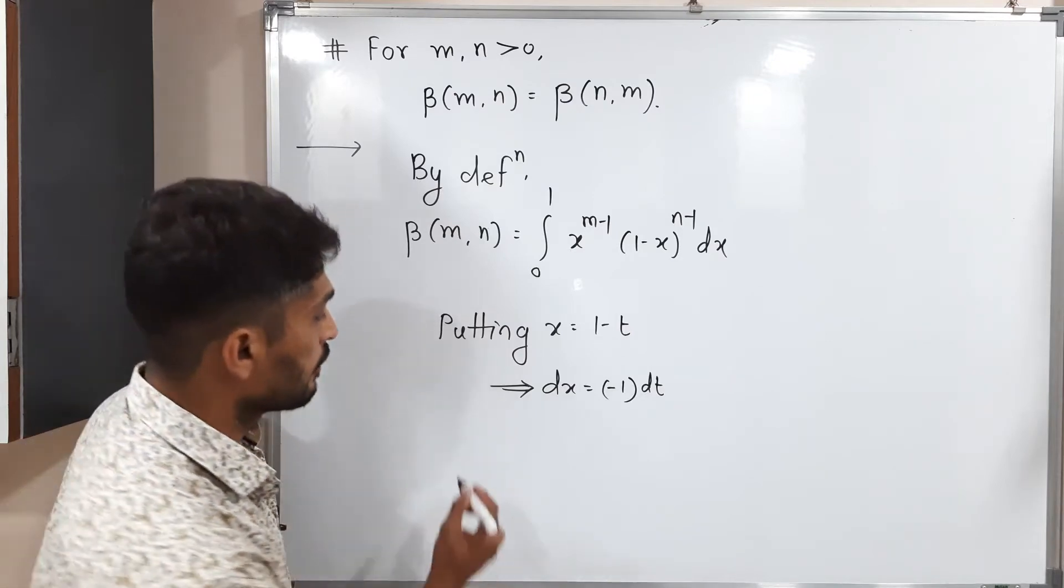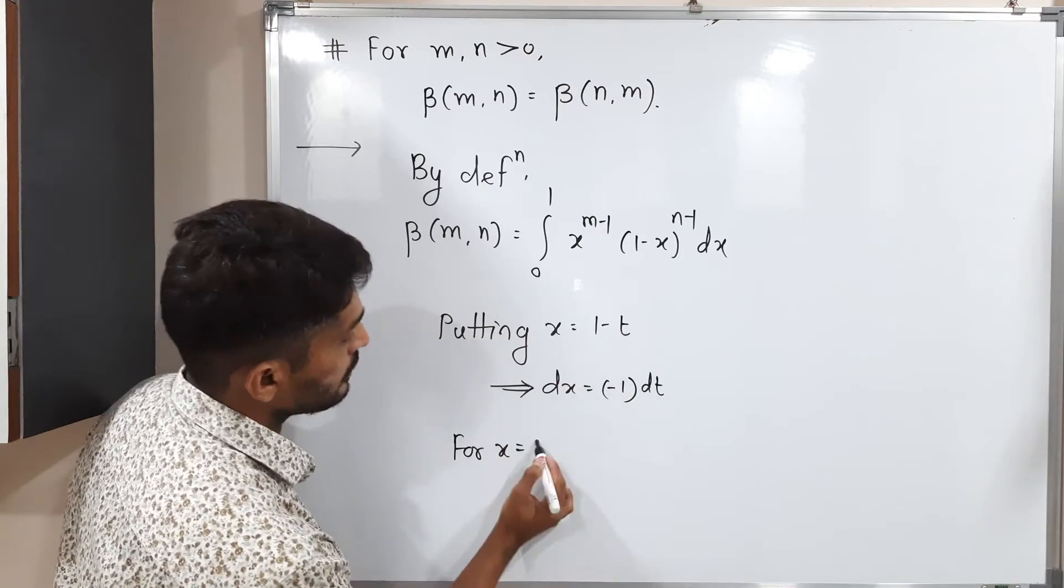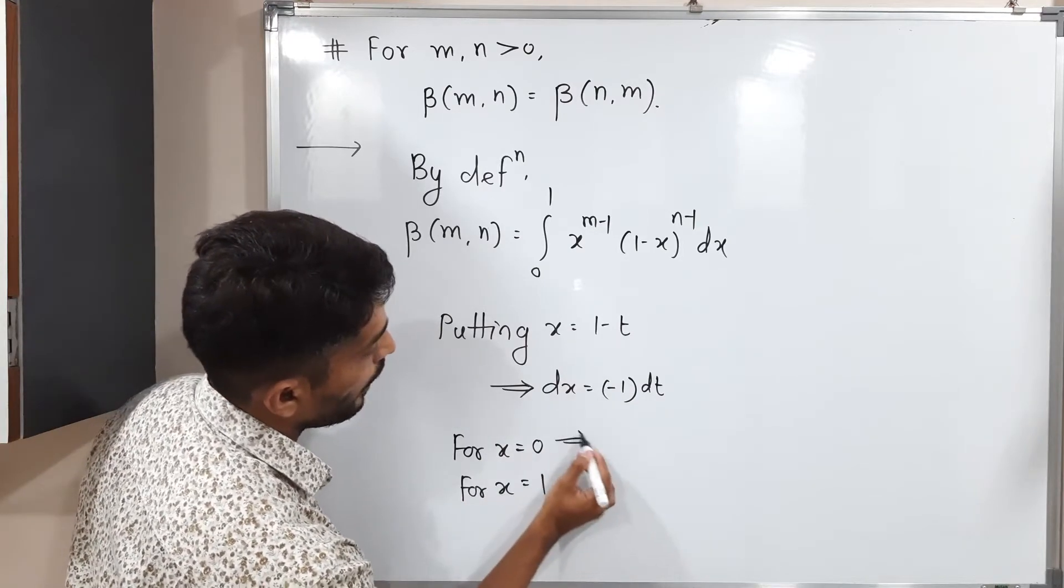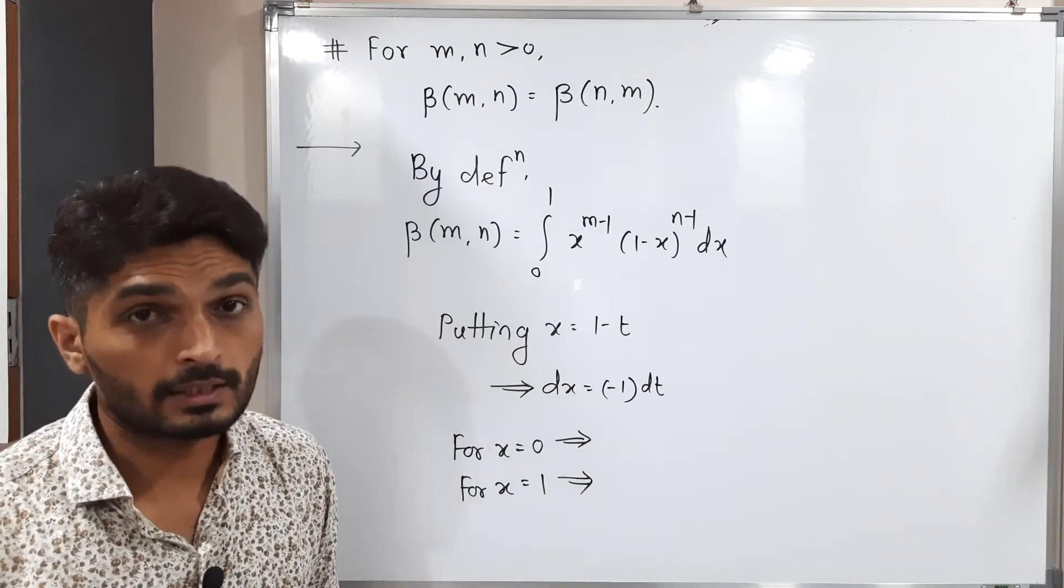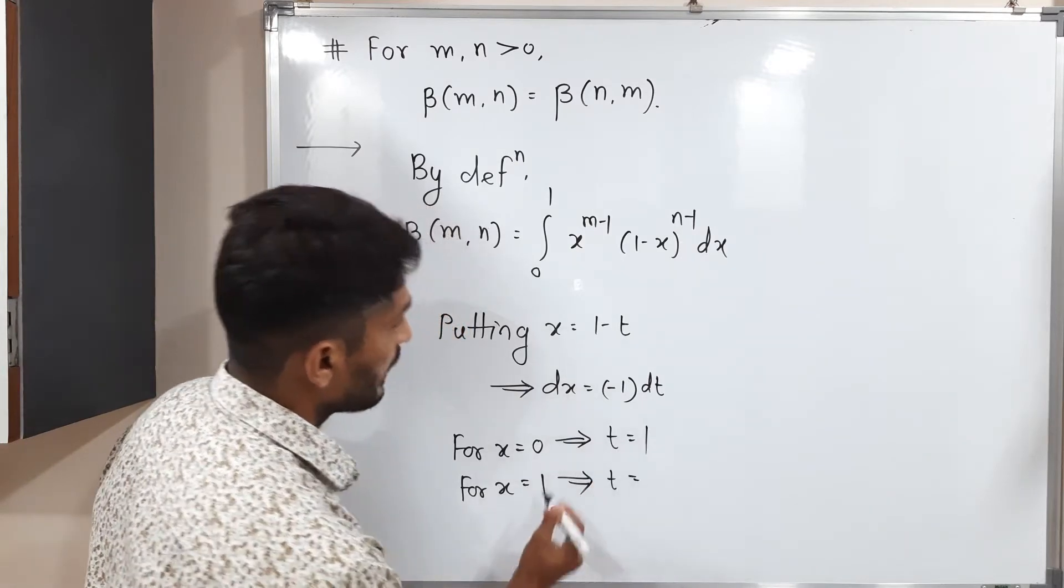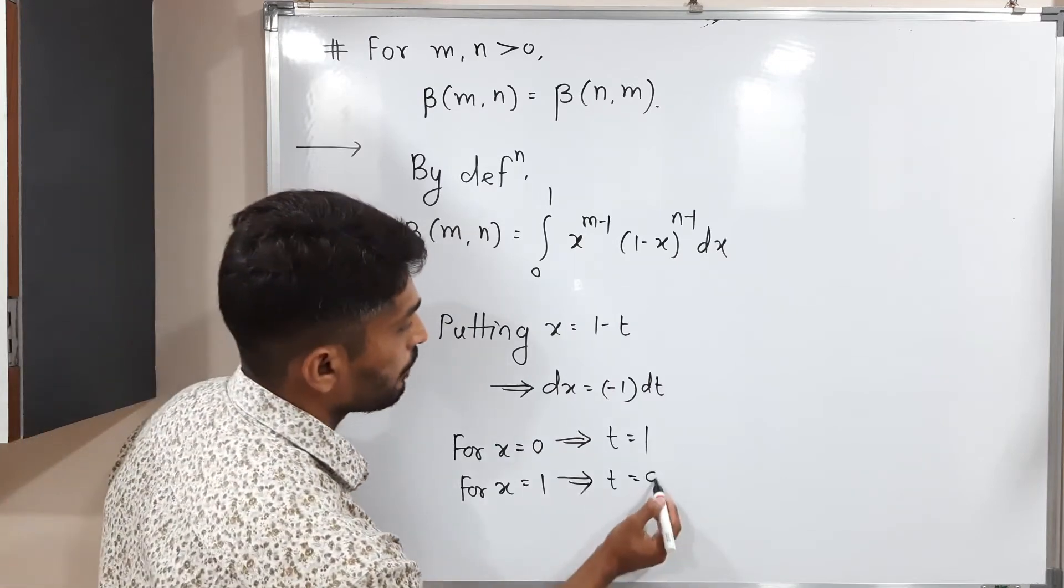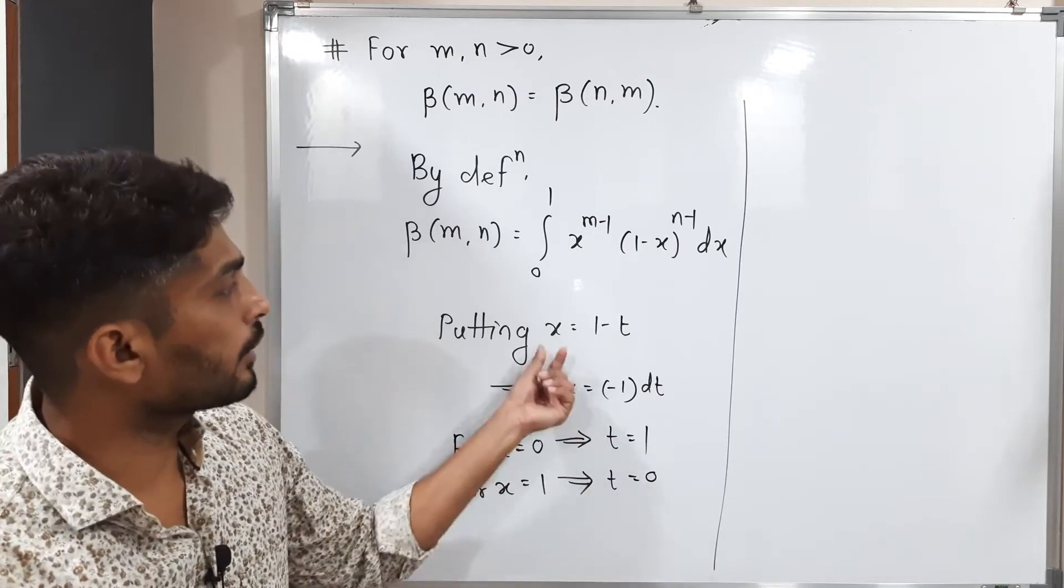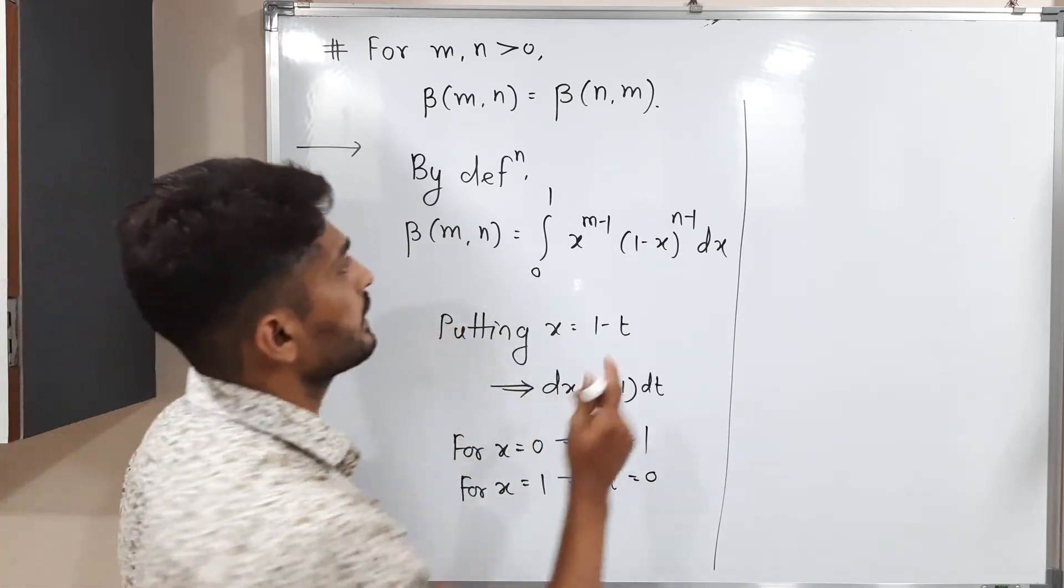After that, we will find new limits for x equals 0 and for x equals 1. Let us find new limits. If I put x equals 0 here, we will have t equals 1. So we have new limits and dx equals minus dt. We have got x equals 1 minus t. Let us put all those things in this integration.